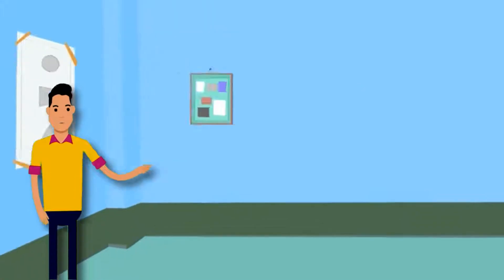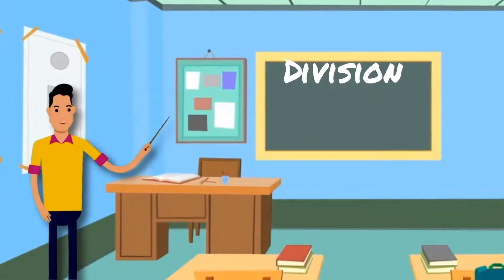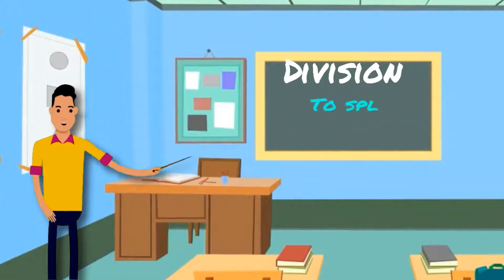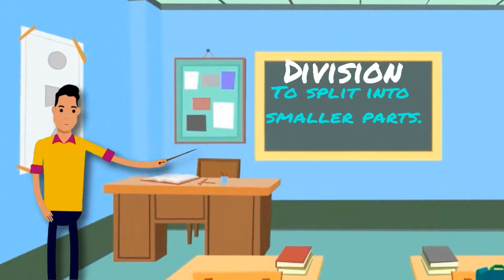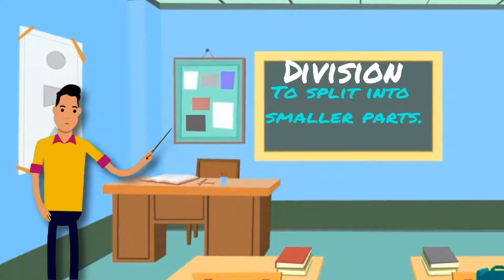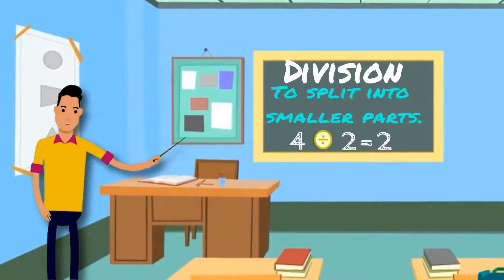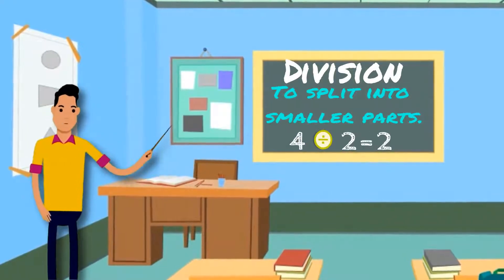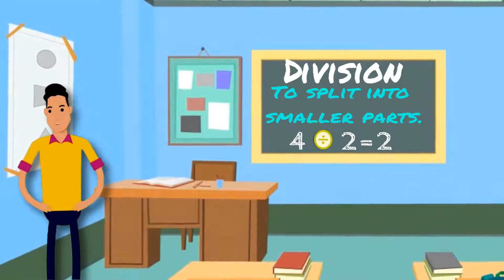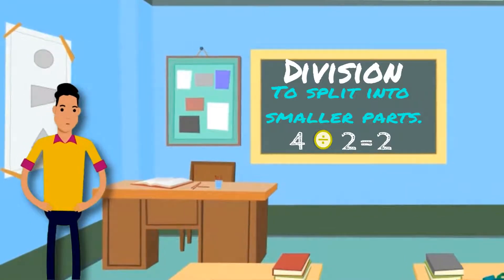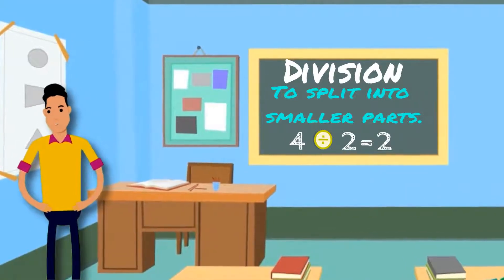So let's go on to the fourth one, which is division. Division means to split into smaller parts or groups. For example, four divided by two equals two. Let's look at a couple examples from the Bible about division.